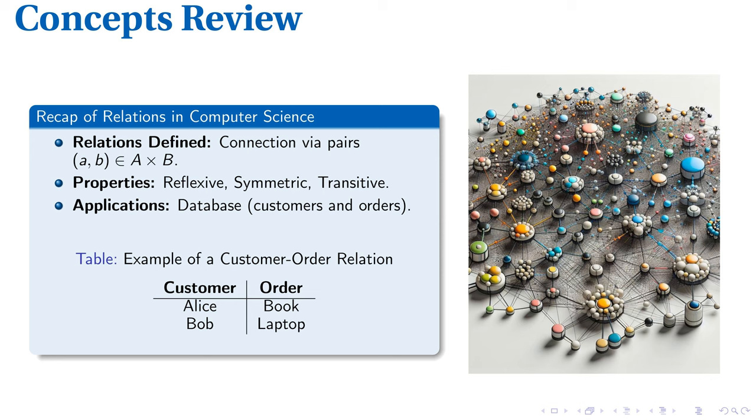Recapping relations. These are essentially the bonds formed within a Cartesian product of two sets, represented by pairs (a,b). Relations boast three core properties: reflexivity, symmetry, and transitivity. In database contexts, they're pivotal, enabling efficient mapping between customers and their corresponding orders.